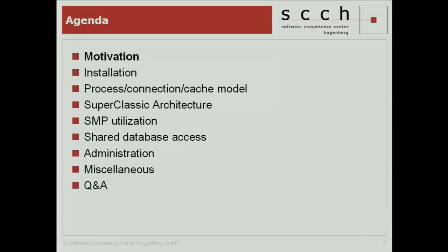First of all, a bit of audience participation. Who is using Fiber 1.0 in production? 1.5? 2.0? 2.1? And 2.5? Which architecture? Super Server? Super Classic? Classic? Fiber 2.5 offers now four architectures. You already know Super Server and Classic Server. The new one is called Super Classic. And the embedded server isn't new, but it's now based on the new Super Classic architecture — so this is a change in 2.5 as well.